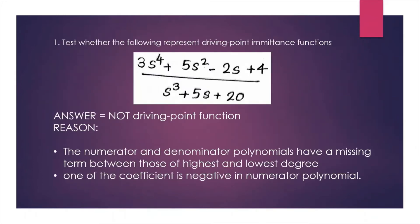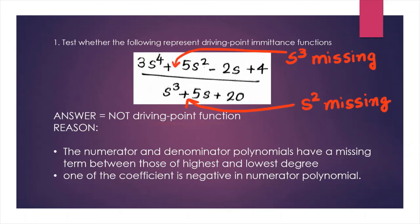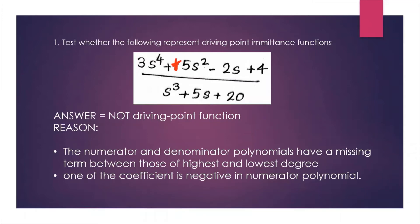Let's see a few examples. You have to check whether the given function represents a driving point function. The first example is not a driving point function because the numerator and denominator polynomials have missing terms between the highest and lowest degree — s³ is missing in the numerator and s² is missing in the denominator. Also, one of the coefficients is negative in the numerator polynomial, that is −2s.